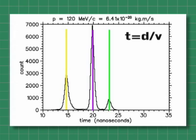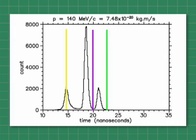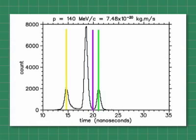Let's look at the position of the three peaks at 140 MeV per C. Now at 140 MeV per C, the pions are at t equals 21.1 nanoseconds, which is certainly smaller than it was for 120 MeV per C. The pion flight time has decreased by 2 nanoseconds. In other words, the pion velocity has increased.